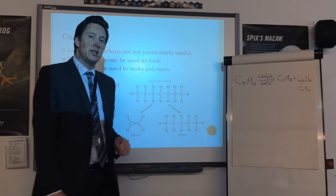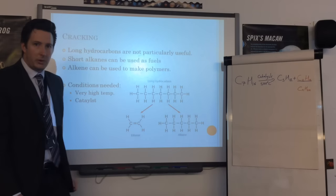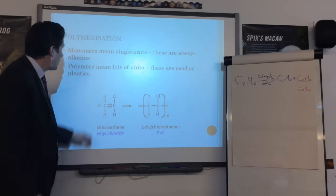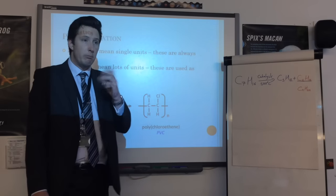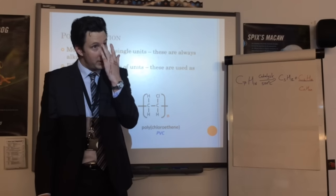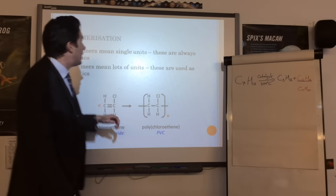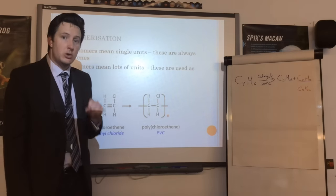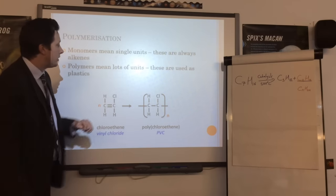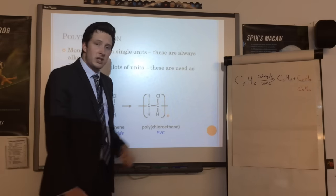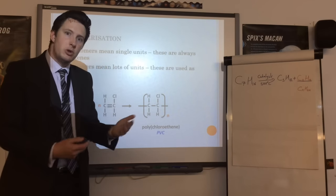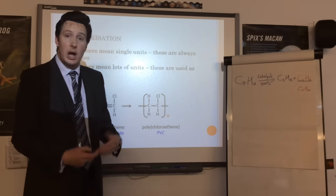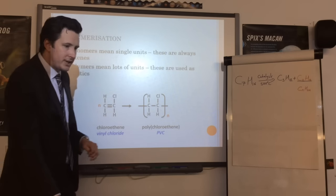Using an alkene, we can make a polymer through polymerization. A few definitions: a monomer means single units - 'mono' means one. In GCSE, alkenes are always used as monomers. A polymer means lots of units - 'poly' means lots. Polymers are our plastics. They're non-biodegradable but useful because they're strong and lightweight. The important bit is how to draw a polymer from a monomer or vice versa.